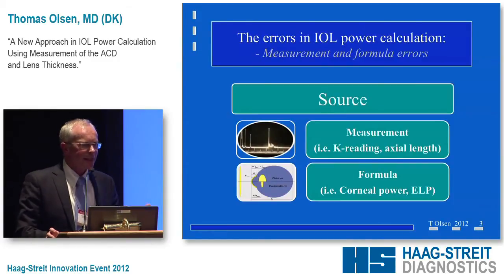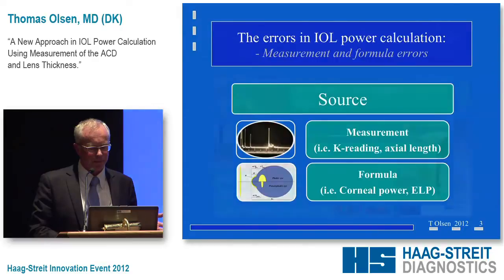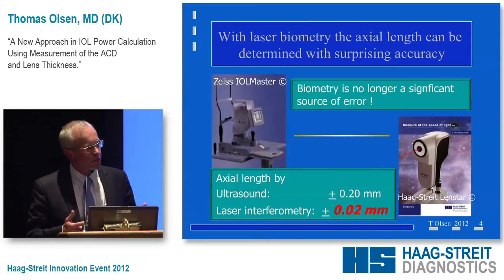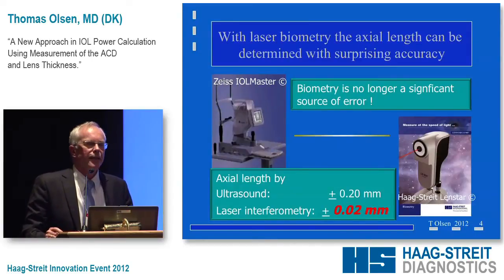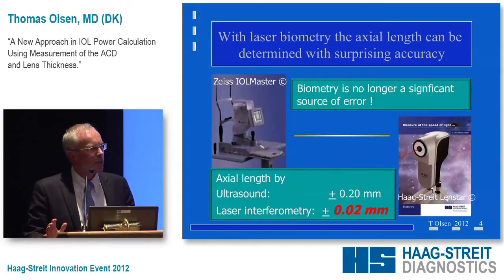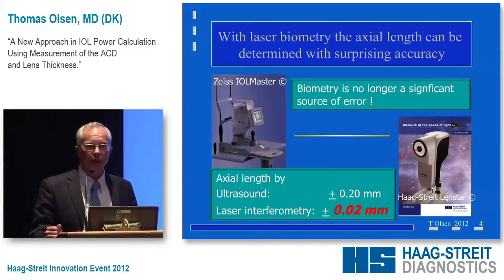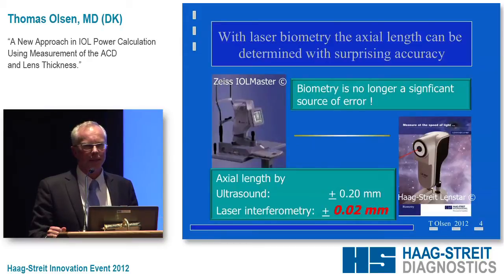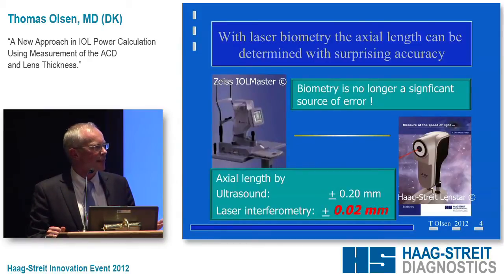We have the measurement errors and we have the formula errors. Since the introduction of laser biometry — the IOL Master came around 2000 — we had a new scene. The accuracy with laser biometry is so incredibly high that a standard deviation of about 20 microns on the axial length will translate into less than a tenth of a diopter error at the spectacle plane. But in my practice, not every patient ends up within a tenth of a diopter, so we must have more errors in the game.